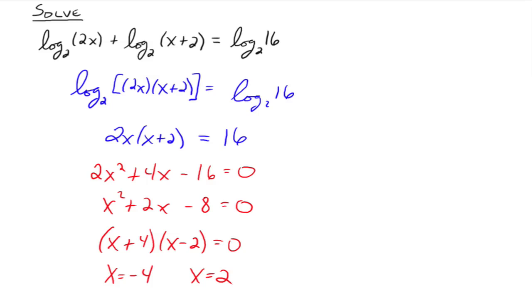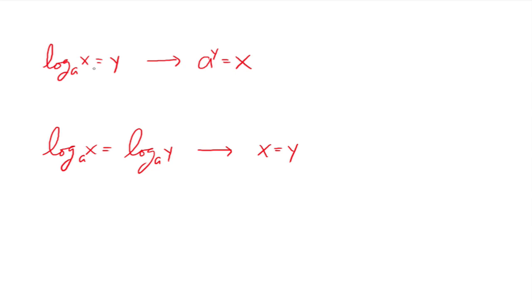Now we must check that none of our arguments become negative or zero. If you take negative 4 and plug it in for x in the first argument — 2 times negative 4 — you get negative 8, so we can't use negative 4. For x equals 2: plugging in gives positive 4 in both arguments — that's fine. So x equals 2 is the only solution. Sometimes a logarithmic equation has no real solution, and that's just the way things go. Keep in mind the goal: write equations as one logarithm equals one number, or one logarithm equals one logarithm. Study well — please let me know if you have any questions.